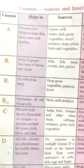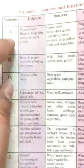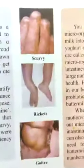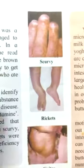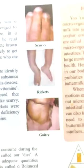See next: Vitamin A — you have to read the chart with sources, functions and deficiency. It may come for the exam. Scurvy is caused by vitamin C deficiency, rickets by vitamin D deficiency, and goiter due to iodine deficiency.